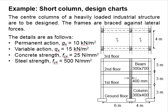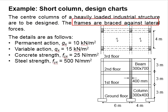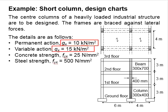Let's try an example to design a short column using the design chart. The center columns of a heavily loaded industrial structure are to be designed. The frames are braced against lateral forces. The loads are gₖ = 10 kN/m², qₖ = 15 kN/m². The concrete strength is fₖ = 25 N/mm² and the steel strength is fᵧₖ = 500 N/mm².